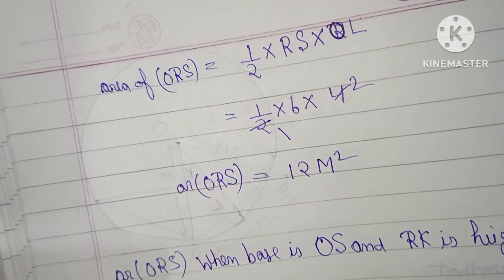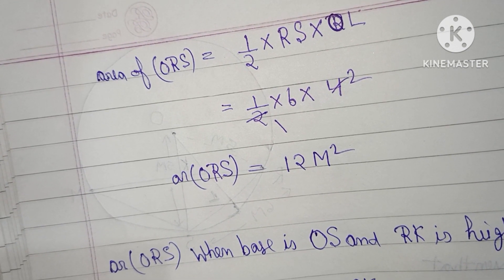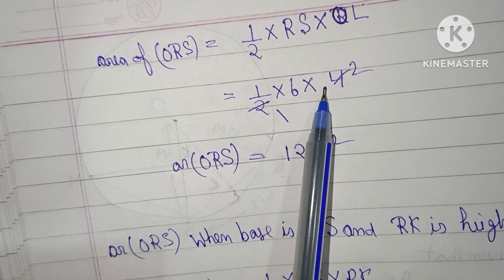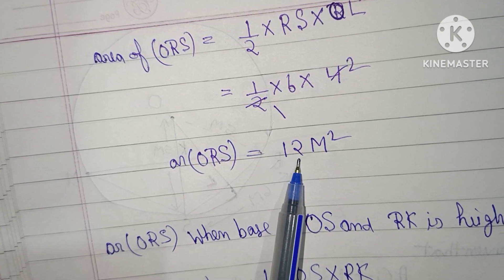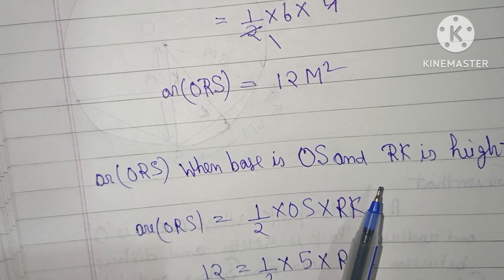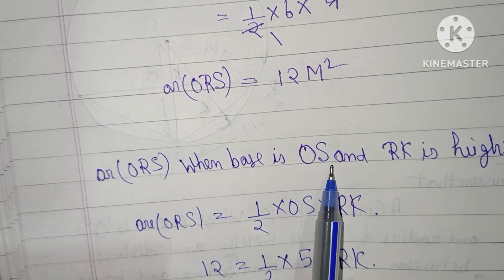Area of triangle ORS equals one-half into OS into OL. Solving: one-half into 6 into 4 equals 12 meter square.